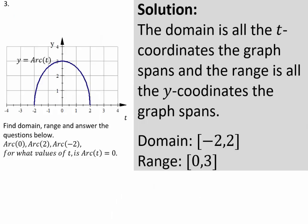The domain is the left-right span of the graph and the range is the up-down span of the graph. This function is not discrete — it is actually a curve. The left-right span, which is the t axis, goes from negative 2 to 2 including both endpoints. So the domain in interval notation would be square bracket negative 2 comma 2 square bracket. That tells you it's all the t coordinates between negative 2 and 2. For the range, the y coordinate spans from 0 all the way to 3, so the range would be the closed interval 0 to 3.